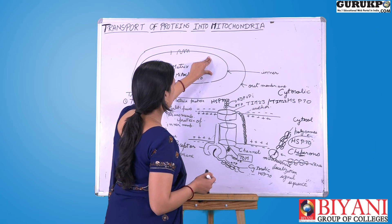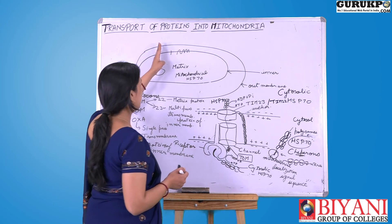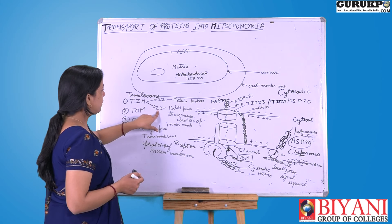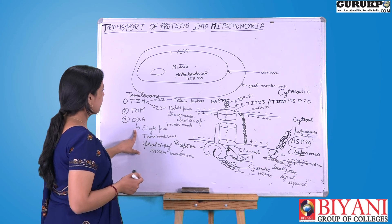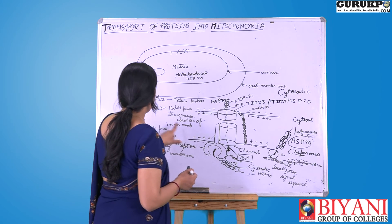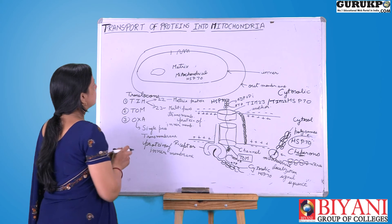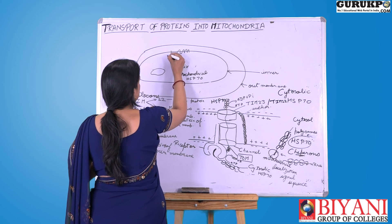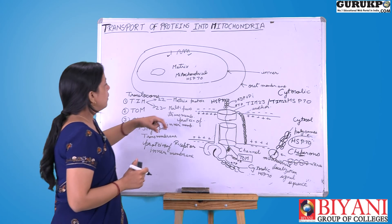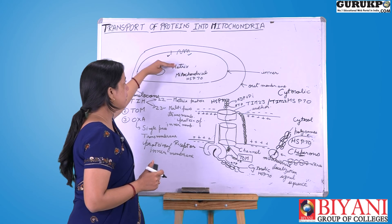Some proteins meant for the matrix remain in the matrix, but proteins meant for the inner mitochondrial membrane are transported through TIM23 and OXA. TIM23 is for transport of multipass transmembrane proteins, and OXA is for transport of single-pass proteins.